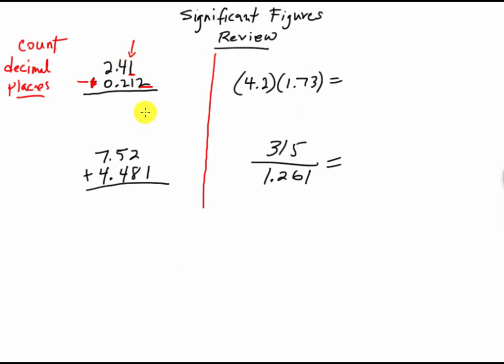So if we do 2.41 minus 0.212, we end up with an answer of... I'm just going to do a calculator real fast, 2.41 minus 0.212, I end up with 2.198.